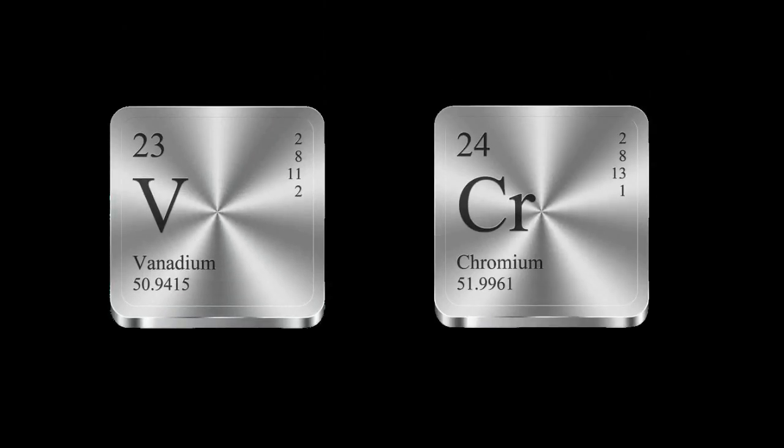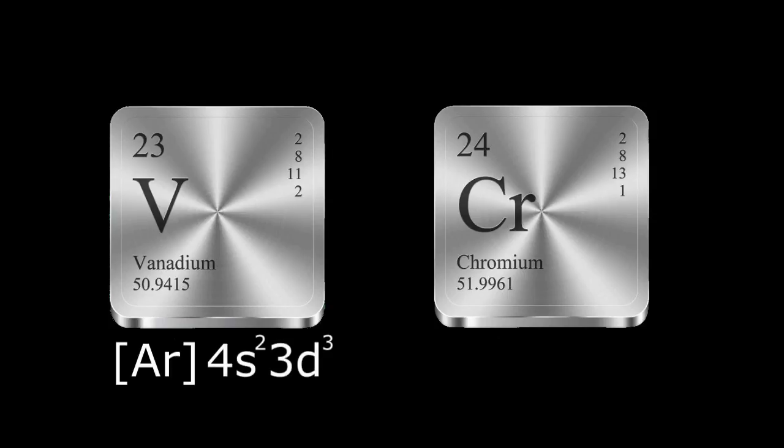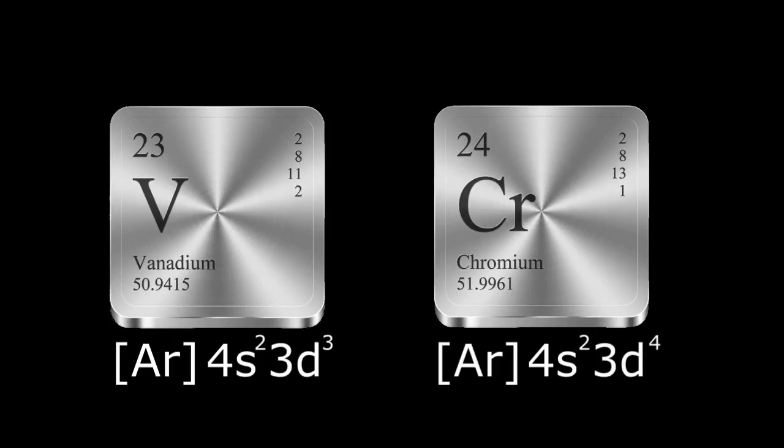The Aufbau Principle is a great guide to quickly figure out elemental electron configurations, but there are some exceptions throughout the periodic table. The first exception occurs between elements 23 and 24, vanadium and chromium. Vanadium's electron configuration is [Ar] 4S², 3D³ with an atomic number of 23. We would expect the next element, with an atomic number of 24, to be [Ar] 4S², 3D⁴, but chromium's electron configuration is actually [Ar] 4S¹, 3D⁵, which produces a more stable configuration than the expected pattern.